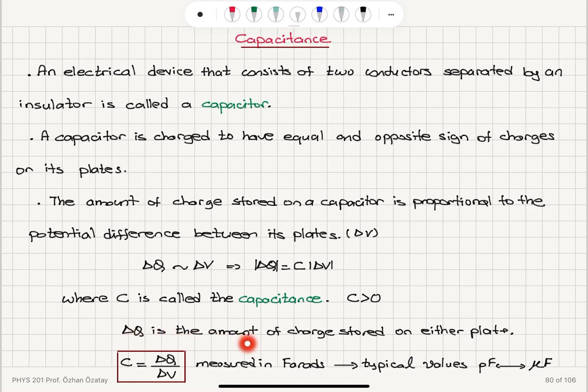Delta Q is the amount of charge stored on either plate. If we talk about positive charge and negative charge here, there will be plus delta Q and minus delta Q. Delta Q is compared to the uncharged situation.